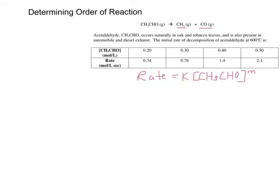So the trick now is to figure out what m is. So what I'm going to do is I'm going to look at these concentrations, and I'm going to find two different experiments where the concentration has doubled. So at this point, the concentration of this has doubled.